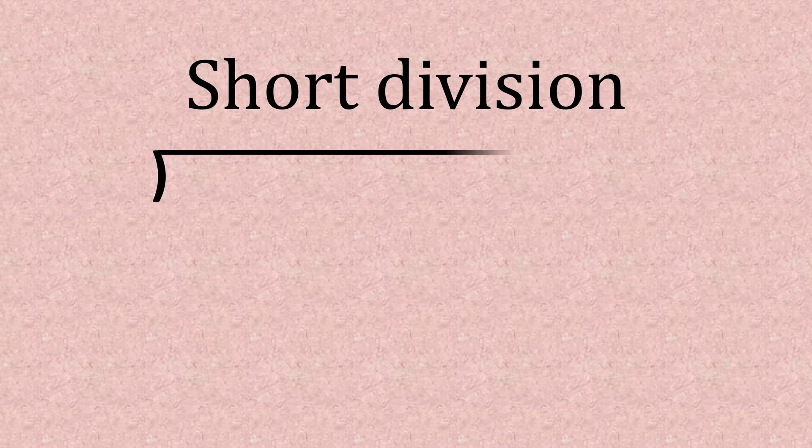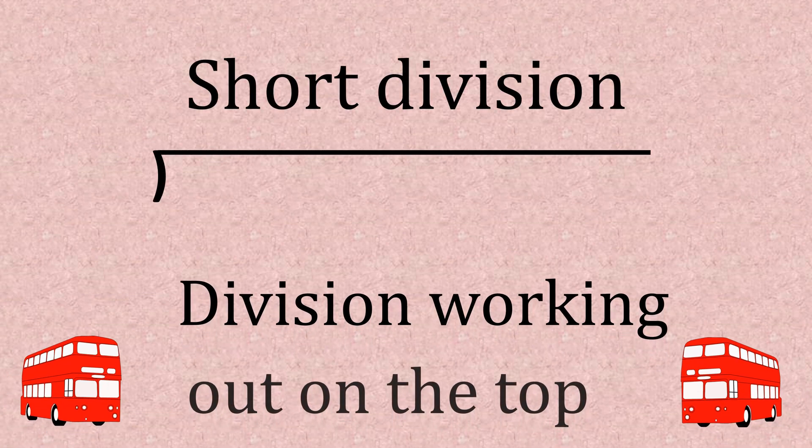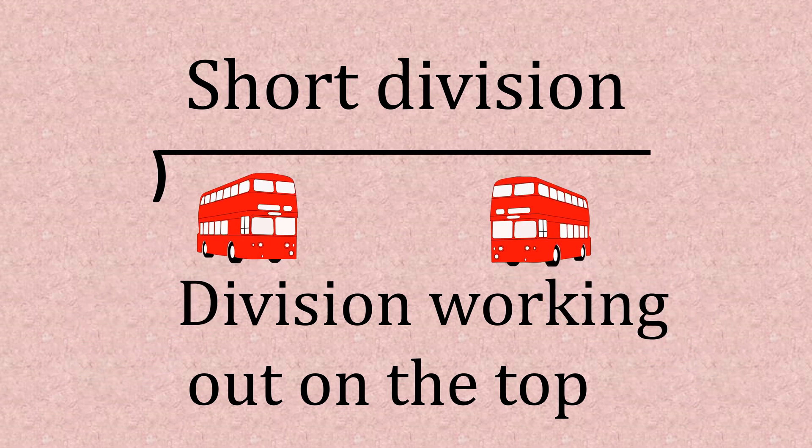Short division, this is when we have a little bus stop and we do our working out, we put it all in the top line. Bus stop method. Let's look at seven into 357, just pop the bus stop on there.